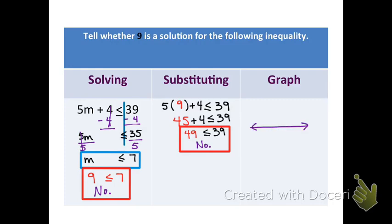On the graph, draw the line with two hash marks. Looking at the solved inequality, m is less than or equal to 7, so use 0 and 7. Since it's less than or equal to, make a colored dot and draw the arrow heading left. If we were to place 9 on this, it would be to the right of 7, which is not in the solution region.